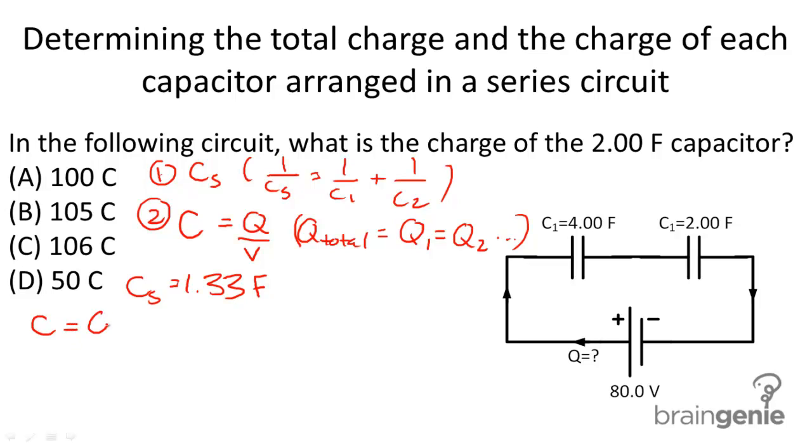Next, we use C equals Q over V. We know voltage to be 80 volts right here, so we're just going to go ahead and plug this in. 1.33 equals Q divided by 80. We get a Q value of 106 coulombs.